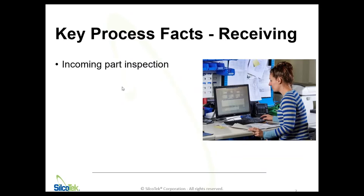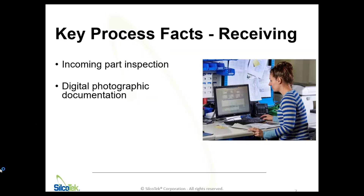When we receive your parts, the first thing we're going to do is inspect them to verify that nothing has been damaged on its way to our facility. We receive parts from all over the world, so if they're not packaged correctly, there might be some dings or dents. Even if those aren't going to be a problem for the customer, we'll always make a note of them, photograph them, and make the customer aware of those damages before we start the process.